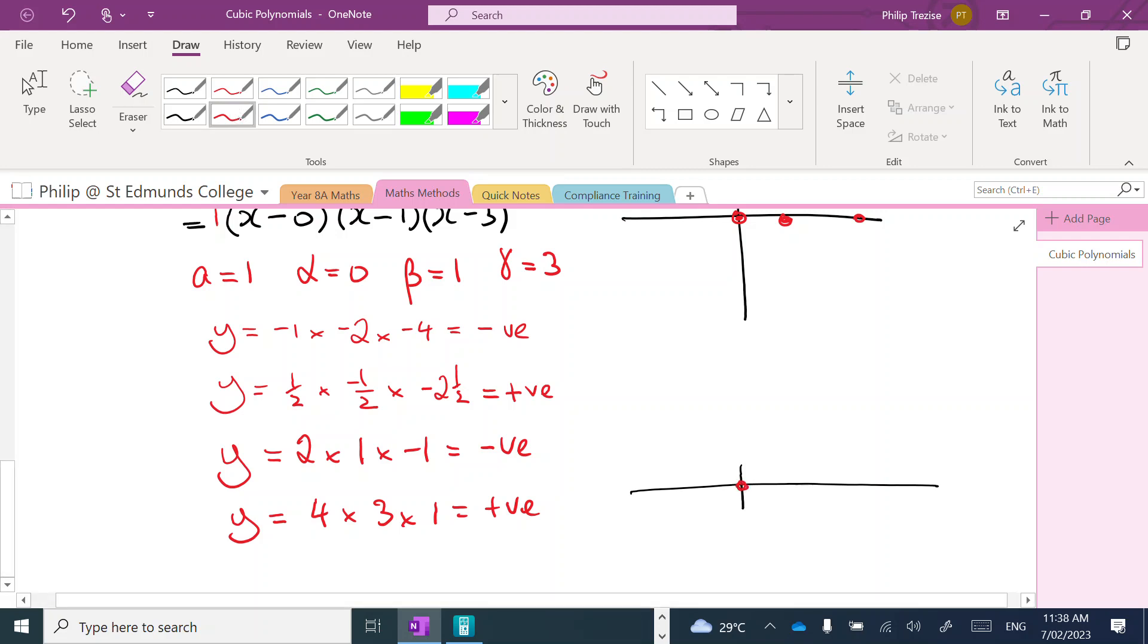We mark the roots of the equation, so that's 0, 1, and 3. And then we just draw, okay, to the left of 0, the graph is negative. And then it crosses through, and then it was positive there, then it crosses through, then it's negative there. And so that's the sign of the function, positive, negative, etc.